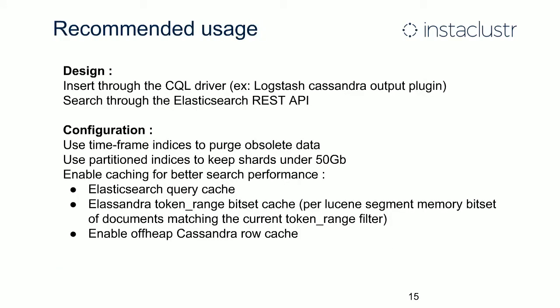Here are some recommended usage guidelines. It's much more efficient to use the CQL driver from Cassandra to insert data rather than using the JSON Elasticsearch API. For example, if you are using Logstash to ingest data, it would be better to use the Logstash Cassandra output plugin rather than the Elasticsearch plugin — you gain all the load-balancing and failover features of the Cassandra driver, and it will be faster. For search, you only have the Elasticsearch REST API.